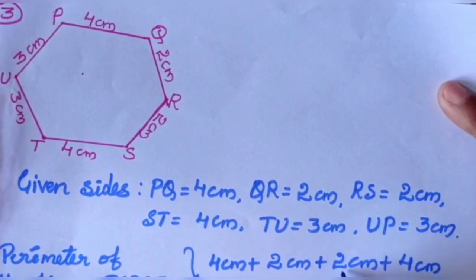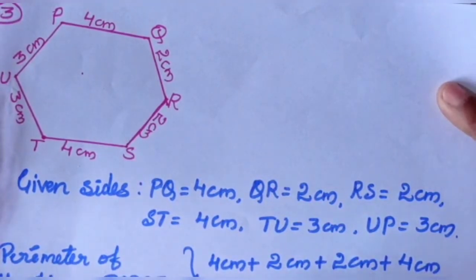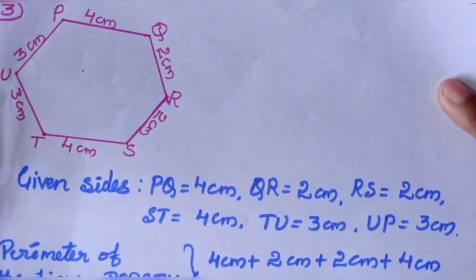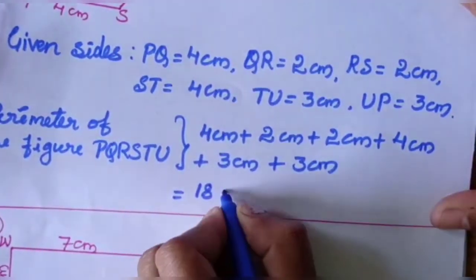4 plus 2, 6. 6 plus 2, 8. 8 plus 4, 12. 12 plus 3, 15. 15 plus 3, 18. Total perimeter of the figure PQRSTU equal to 18 cm.